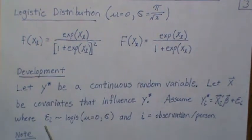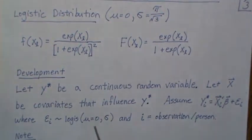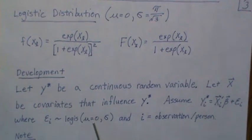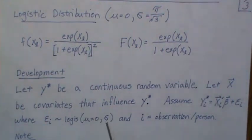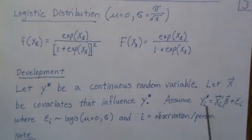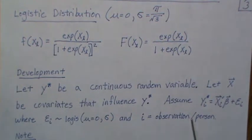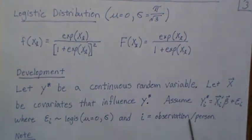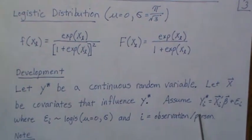Now here epsilon is logistic, it's a logistic distribution, mean zero, and some standard deviation. And note that i is an observation or person, some reason I think of as a person in this example.